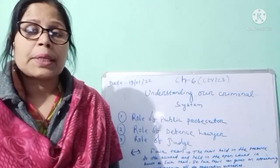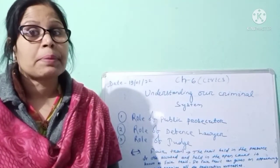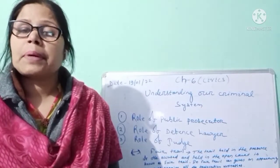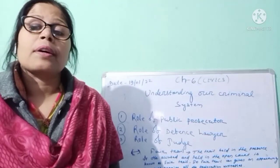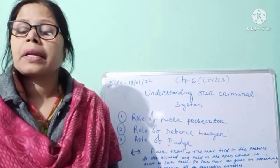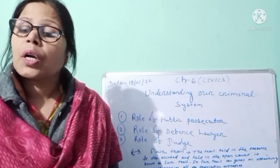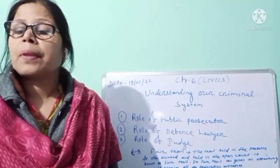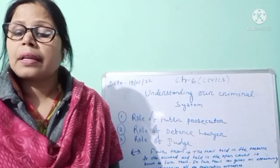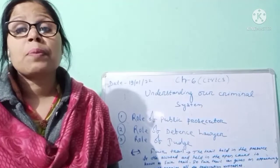What role does the public prosecutor play in the criminal justice system — I am going to explain that in front of you. The public prosecutor is a person present on behalf of our state. In our society, if a criminal offense is considered to have been committed, it is not only against the affected victim but also against our society. So the public prosecutor's role in a criminal offense is much more important.